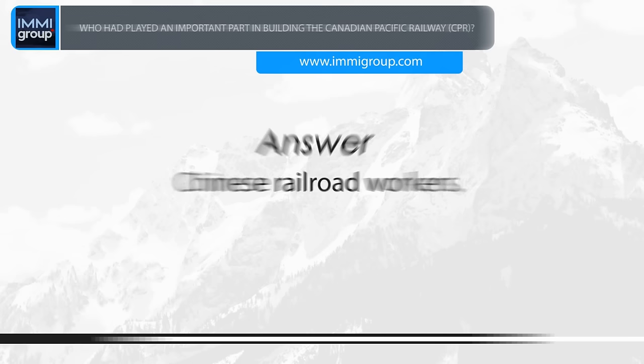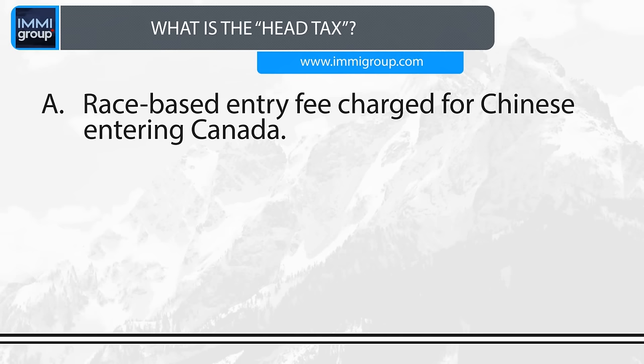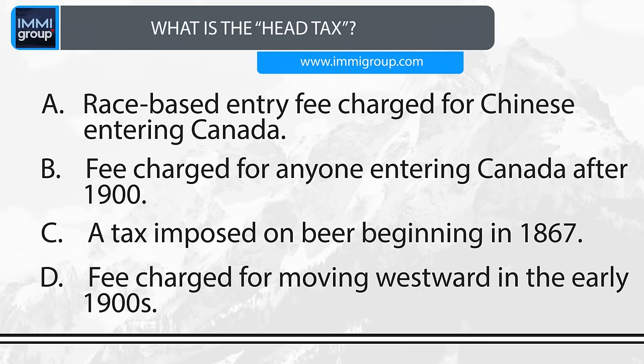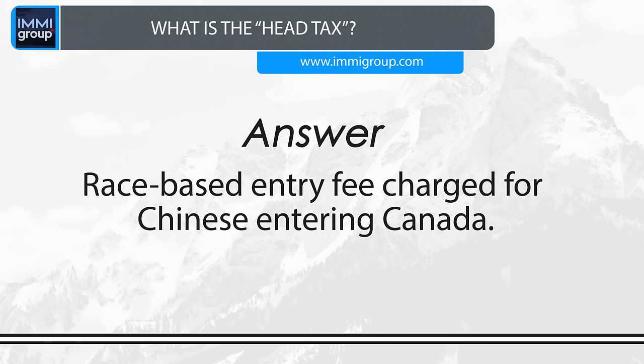What is the head tax? A. Race-based entry fee charged for Chinese entering Canada. B. Fee charged for anyone entering Canada. C. A tax imposed on beer beginning in 1867. D. A fee charged for moving westward in the early 1900s. Answer: Race-based entry fee charged for Chinese entering Canada.